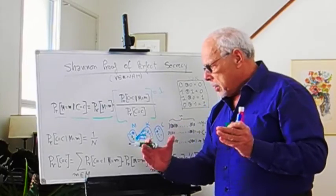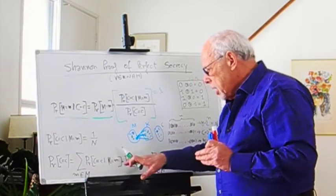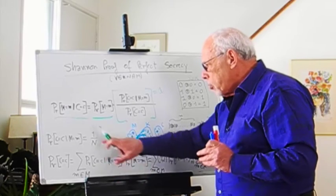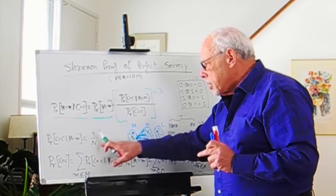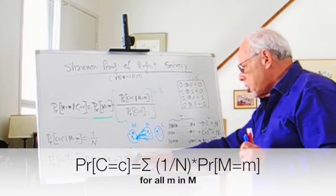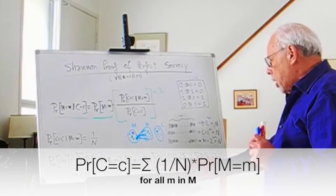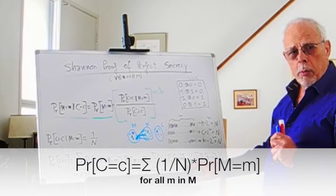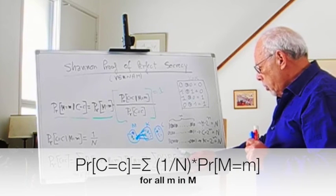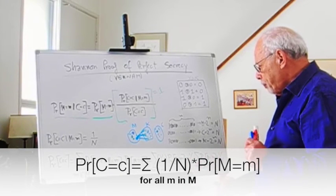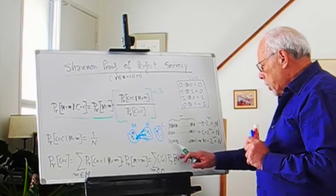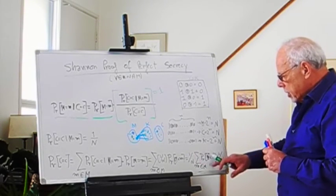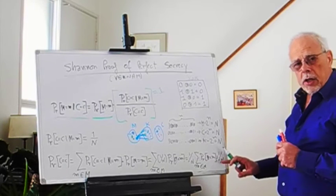So this is this, but this we already found out what it is. This is 1/N. So this can be written this way: 1/N times the probability for the message to be M. We can take the 1/N out of the sigma and get this.